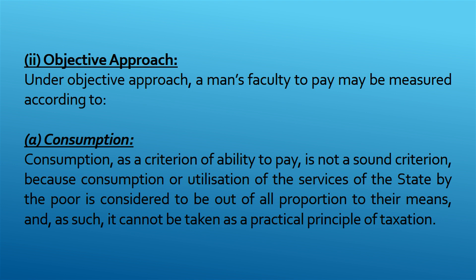Objective Approach. Under the objective approach, a man's faculty to pay may be measured according to the following criteria. First, consumption. Consumption as a criterion of ability to pay is not a sound criterion, because the consumption or utilisation of state services by the poor is considered to be out of all proportion to their means, and as such it cannot be taken as a practical principle of taxation.